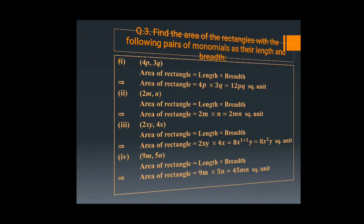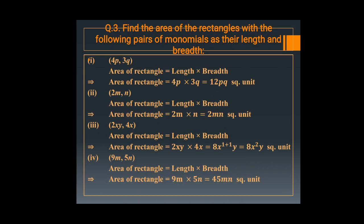Now moving to the next question, here you need to find out the area of the rectangle. Area of rectangle is simply length into breadth. Length and breadth — the two sides given are 4p and 3q. Multiply 4p by 3q equal to 12pq square units.